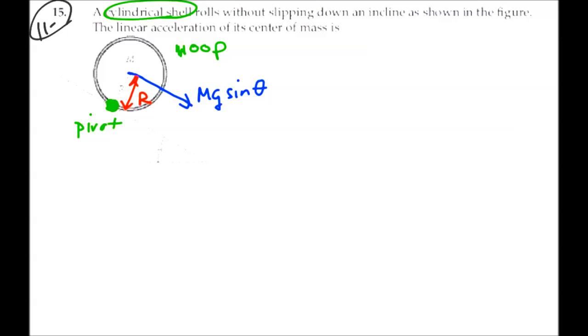Hence, our net torque is going to be equal to this force times the moment arm, mg sine theta, times the moment arm of that force, which is R. That is our net torque for this hoop about that pivot.